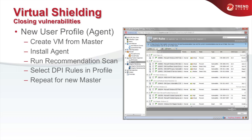Although Deep Security contains over 2,700 different virtual shields for different applications and operating systems, only a fraction of them is normally applicable to any given VM. To make management easier, Deep Security includes a recommendation scan functionality. A recommendation scan will scan the operating system and installed applications in a virtual machine and give you recommendations on which virtual shields should be activated or deactivated because the system has already been patched.